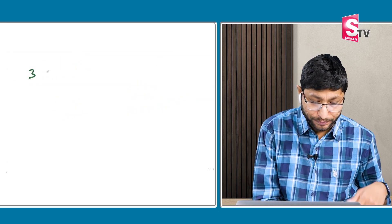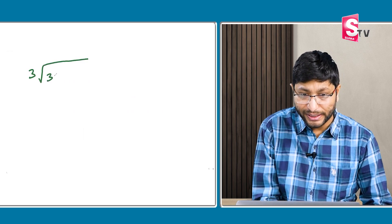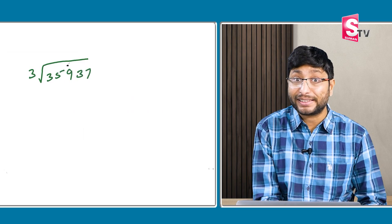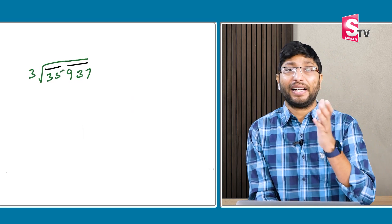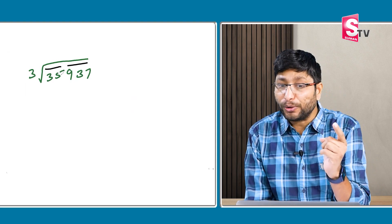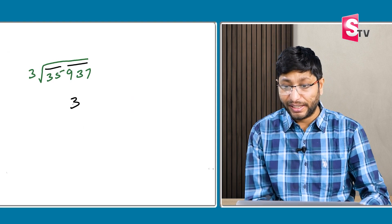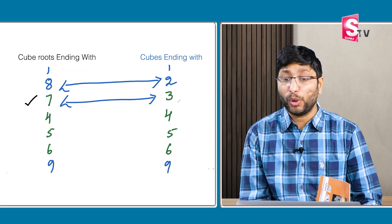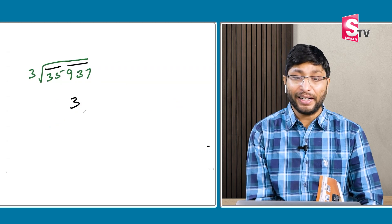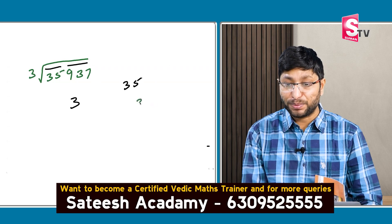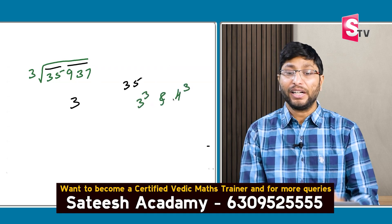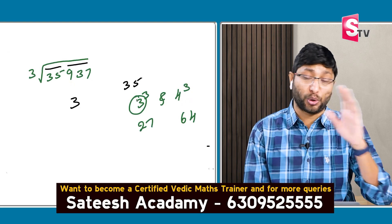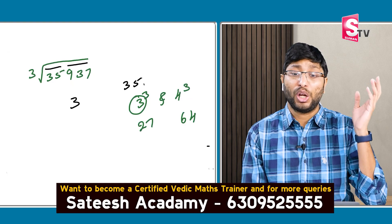Next example: cube root of 35937. Take the last 3 digits (937) and the remaining digits (35). The number ends with 7, so from the table the cube root ends with 3. Now, 35 falls between 3 cube (27) and 4 cube (64). Always take the lowest number: 3. So the answer is 33.